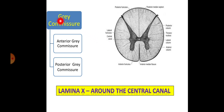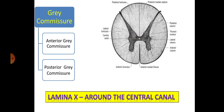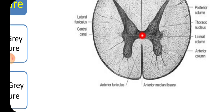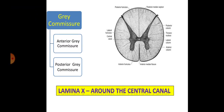The last point is the grey commissure. The right half and left half of the grey matter both communicate with each other in the center, and that is called the grey commissure. This grey commissure is further divided into two parts by the central canal: anterior to the central canal is called the anterior grey commissure, and posterior to the central canal is called the posterior grey commissure. Whatever grey matter is present around the central canal is considered as lamina number 10.